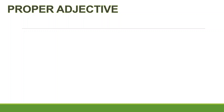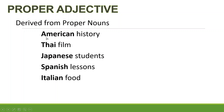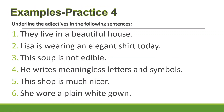The second type is proper adjectives, which are derived from proper nouns. For example, from proper nouns like America, Thailand, Japan, Spain, and Italy, we get: American history, Thai film, Japanese students, Spanish lessons, Italian food. These are proper adjectives because they come from proper nouns. Now, pause the video and try to find and underline the adjectives in the following sentences.